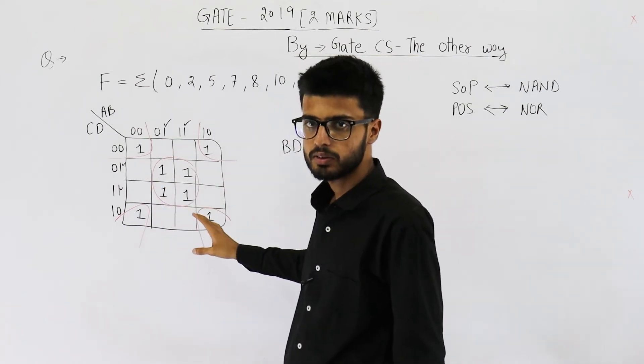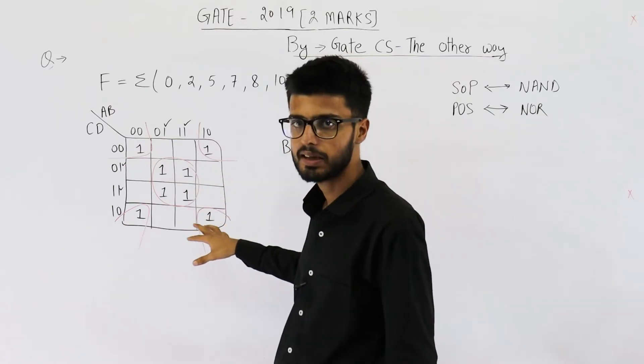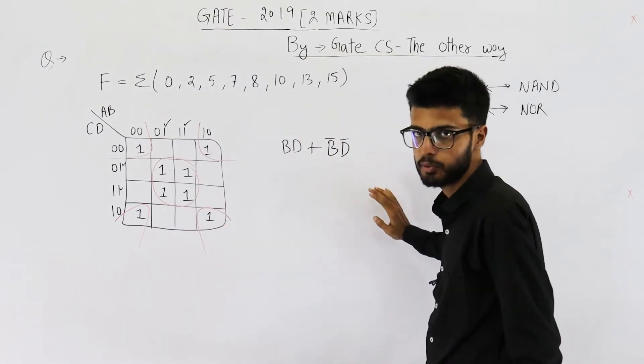You mark these zeros and solve the question according to max terms. That means you group the max terms and directly get POS form.